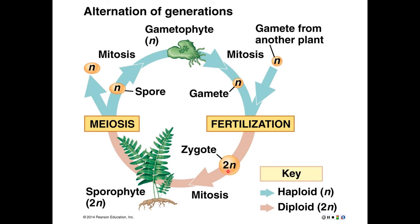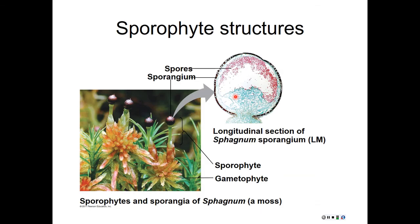Depending on the group of plants we're looking at, the appearance of the sporophyte and the gametophyte will vary. As in this fern life cycle, the sporophyte is the larger, more conspicuous plant and the gametophyte is quite small. By contrast, in mosses the sporophyte is very tiny and it is the gametophyte that is the larger, more conspicuous plant. But the basics of alternation of generations stay the same regardless of plant group.